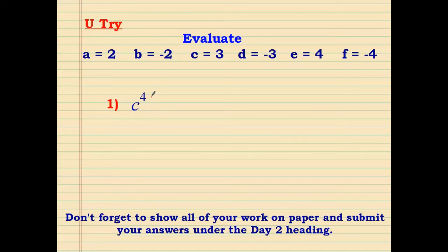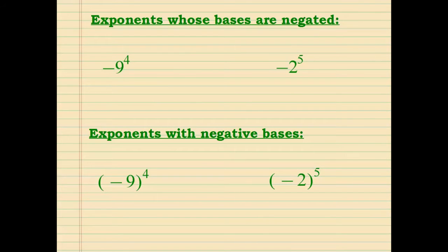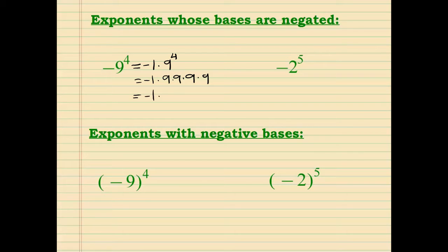Here's a you-try for you — take a moment to evaluate. Now let's look at exponents whose bases are negated. When we have a negative sign in front of a base with an exponent, the negative acts like a negative 1 multiplied by the exponential number. In this case, we would have negative 1 times 9 times 9 times 9 times 9 times 9 — that's negative 1 times 81 times 81, equal to negative 1 times 6,561, which equals negative 6,561.